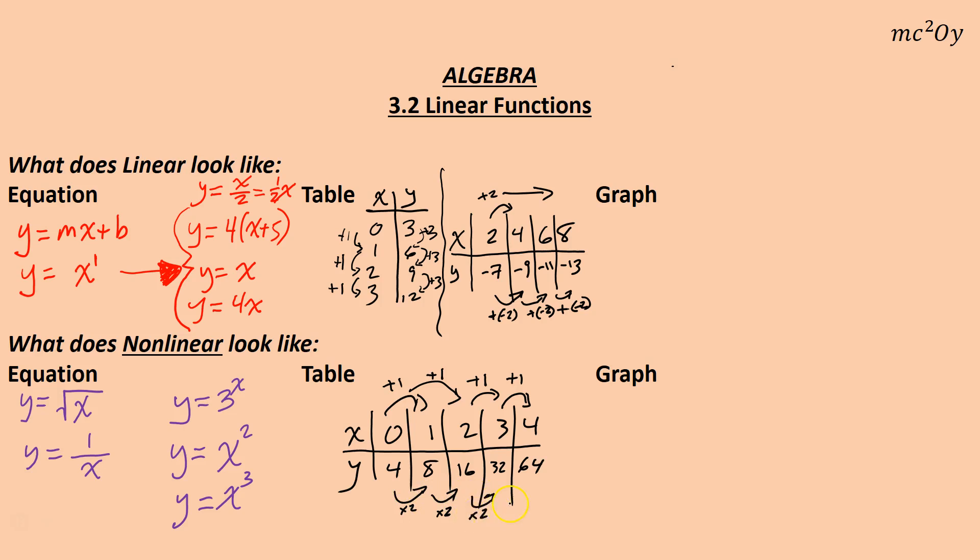So there is actually a pattern. The pattern is I'm multiplying by two. So there is a pattern. However, we're not adding. We are multiplying here. So in order for it to be linear, you have to be adding a constant amount to both parts. Or subtracting. If you're multiplying or have any other pattern, that's not linear.